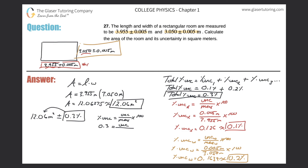Now I want to find the actual value of that uncertainty. To do that, I need the measurement — which is the area. So plugging in the area value: 0.3 times 12.06 equals the uncertainty times 100. That works out to 3.618, but using one sig fig, that should be 4. So 4 equals uncertainty times 100. Dividing out the 100, the uncertainty is 0.04 meters squared.